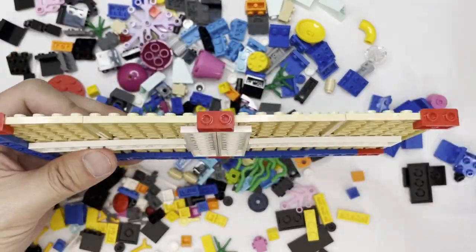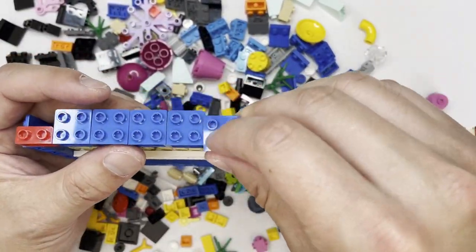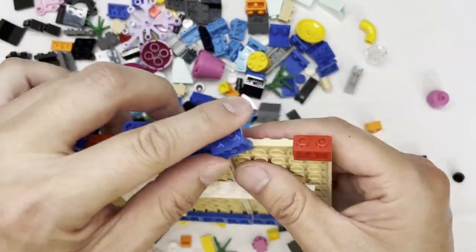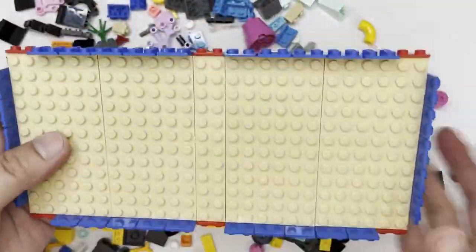Going back to the set, the Fish Tank was released on August 1st, 2021 and weighs in at a piece count of 352 pieces. Those pieces will cost you $29.99, which in my opinion is not bad at all.